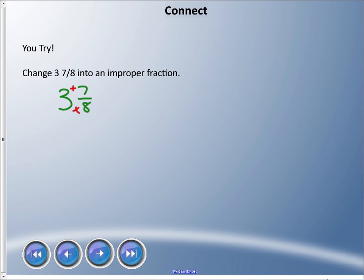Remember I said we want to multiply here and then add here. So three times eight is twenty-four, and then I'm gonna add that numerator plus seven. Twenty-four plus seven is thirty-one, and I keep the same denominator, so it's thirty-one eighths all together.